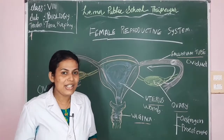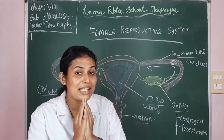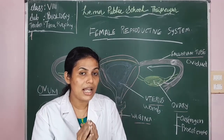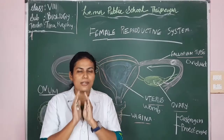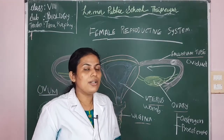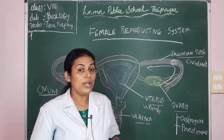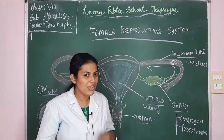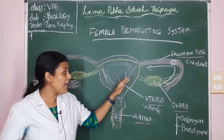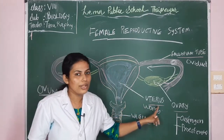The zygote is the first cell of every new human being. This zygote develops into a new child or infant. The child develops inside this bag-like region called the uterus.